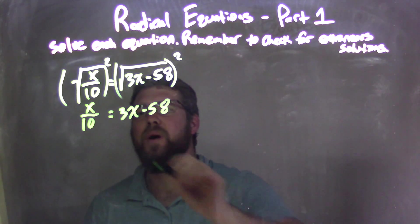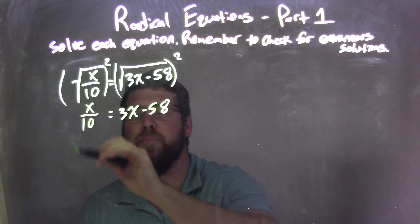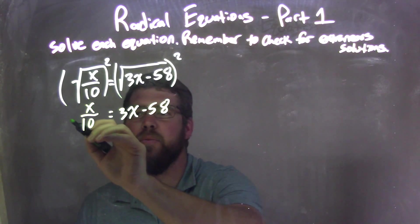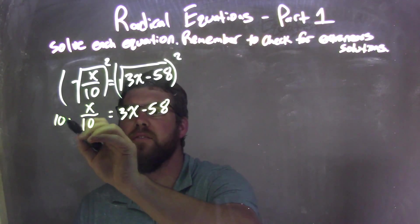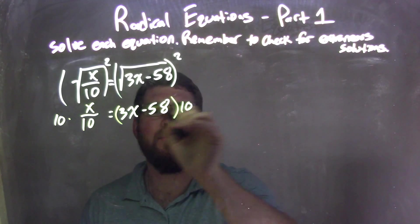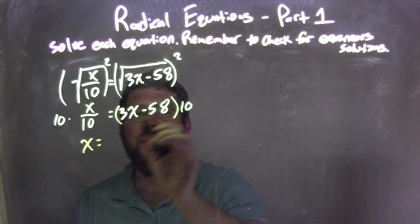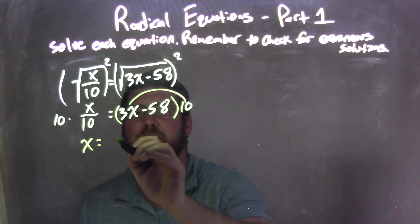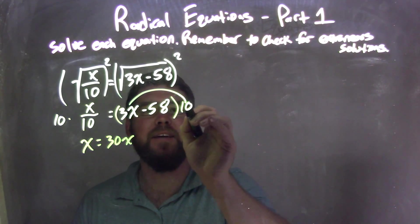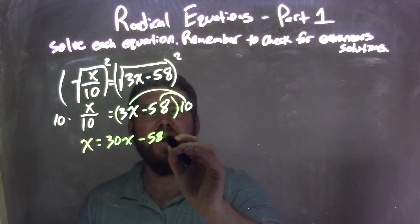From there, I'm going to multiply by 10 to both sides to get x by itself on the left. Remember, that 10 distributes to both parts on the right. The 10s cancel, leaving me with x equals 10 times 3x, which is 30x, and 10 times 58 is 580.